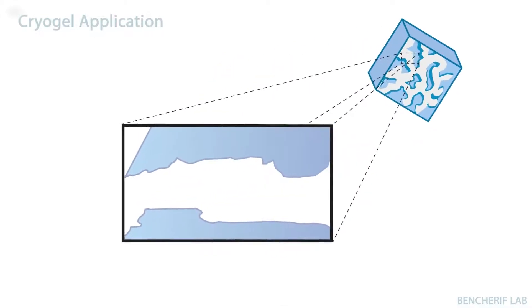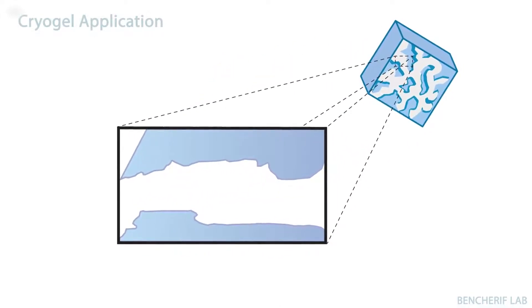The interconnected macropores are an ideal environment for the attachment and delivery of cells. Additionally, this structure can promote immune cell infiltration and trafficking.